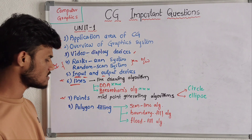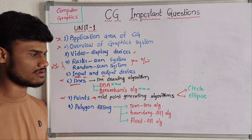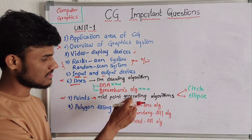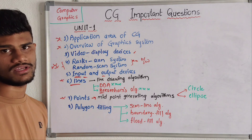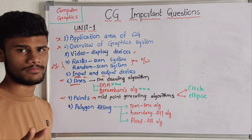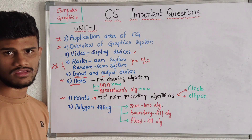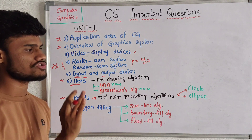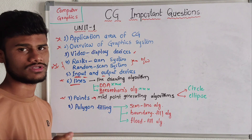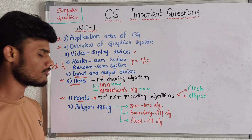In the points topic, we have midpoint generator algorithms. We have circle generative algorithm and ellipse generative algorithm — two types of algorithms. You need to prepare both. If you prepare one, it is easy to prepare the other, so by combination of both, you need to prepare the complete points topic.